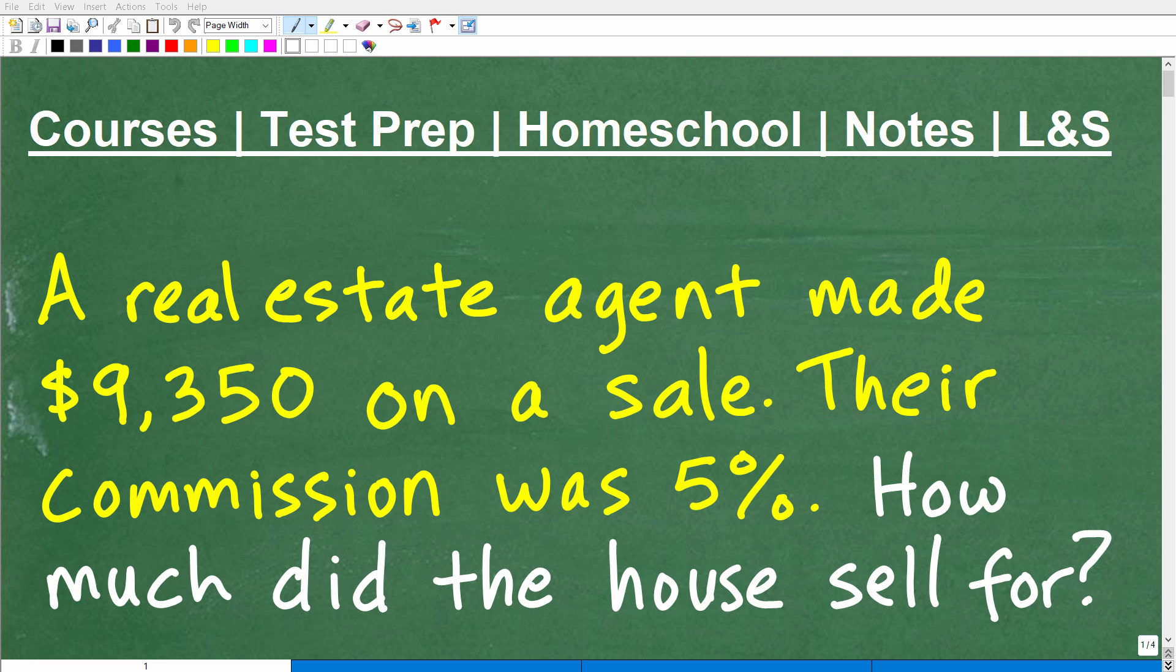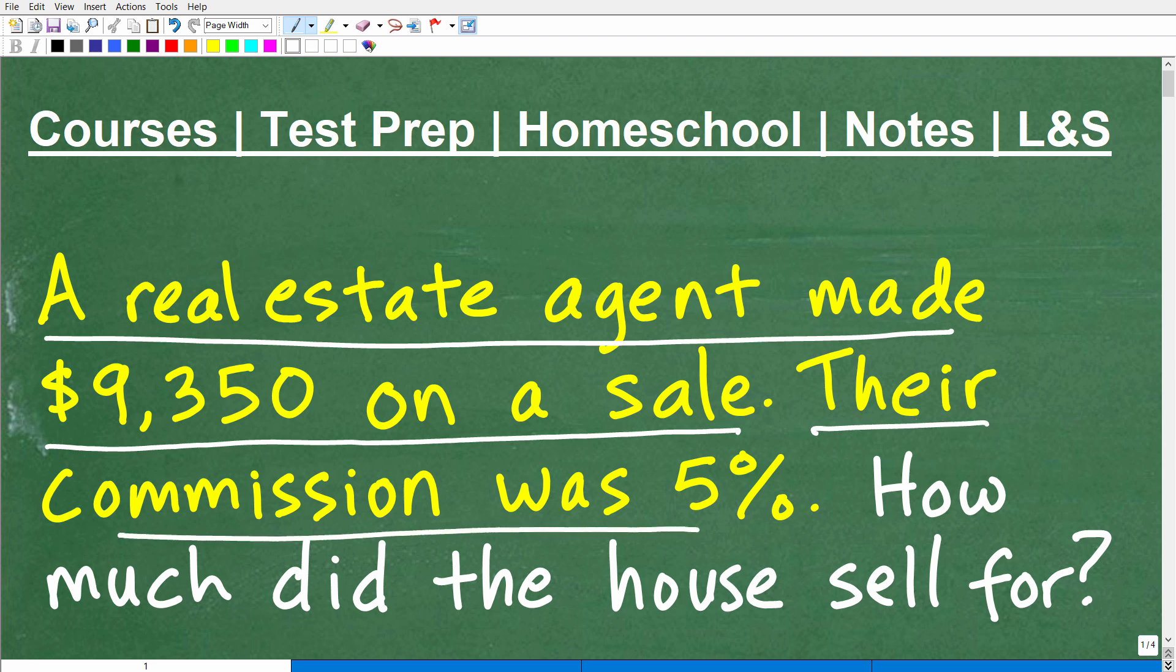Okay, let's go ahead and solve this nice little math word problem. As an extra bonus here, this is kind of a realistic or real-life math word problem. If you don't know much about real estate or basic real estate transactions, I think this will be interesting because you're going to learn something about real estate. Let's go ahead and read the problem. A real estate agent made $9,350 on the sale of a home. Their commission was 5%. How much did the house sell for?